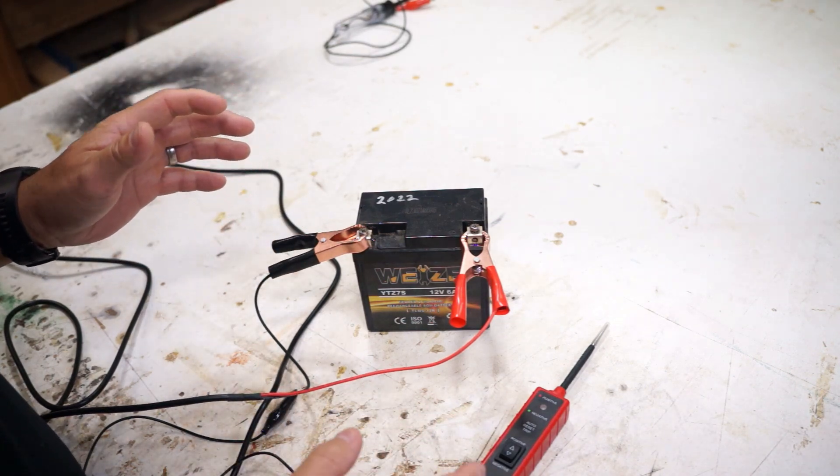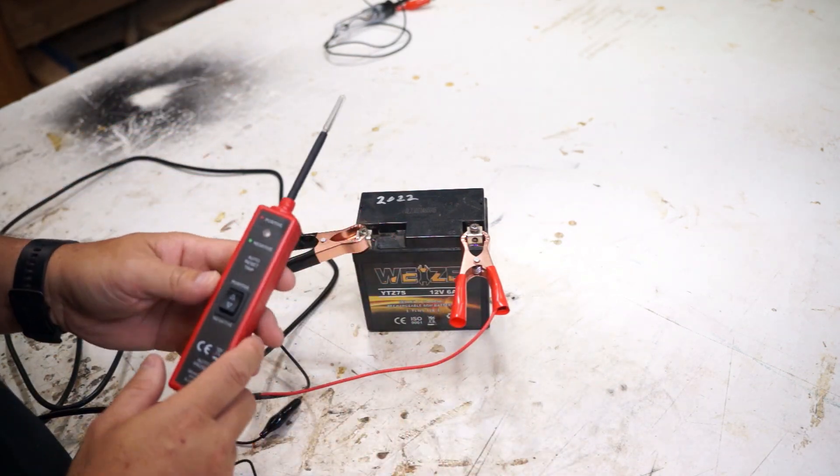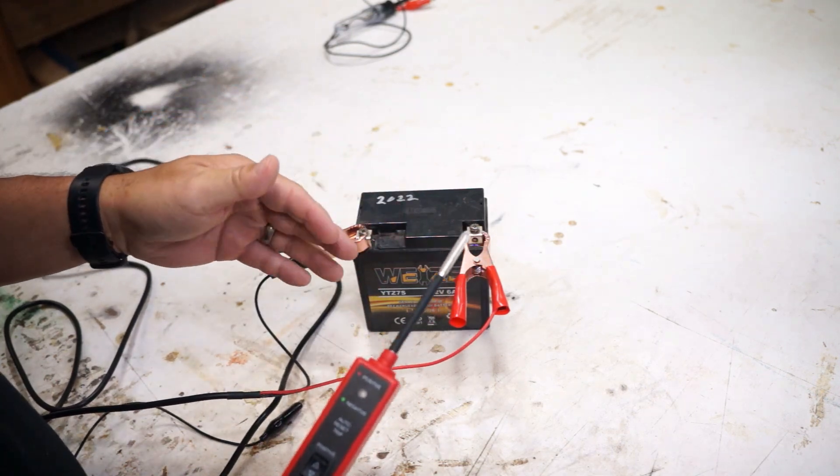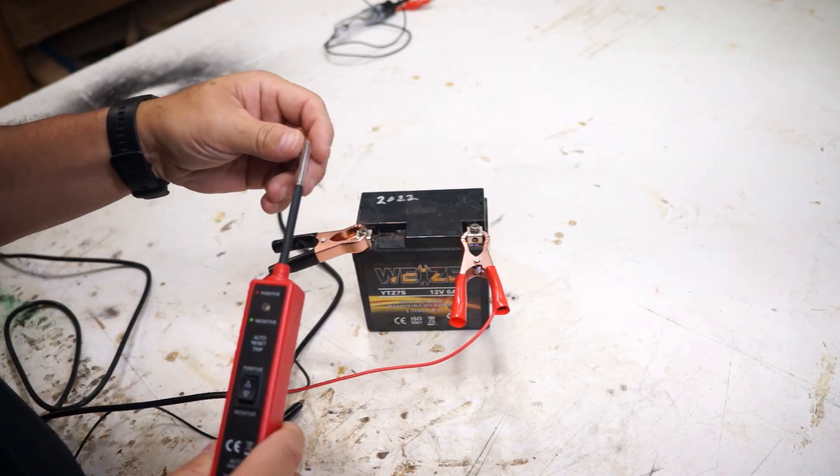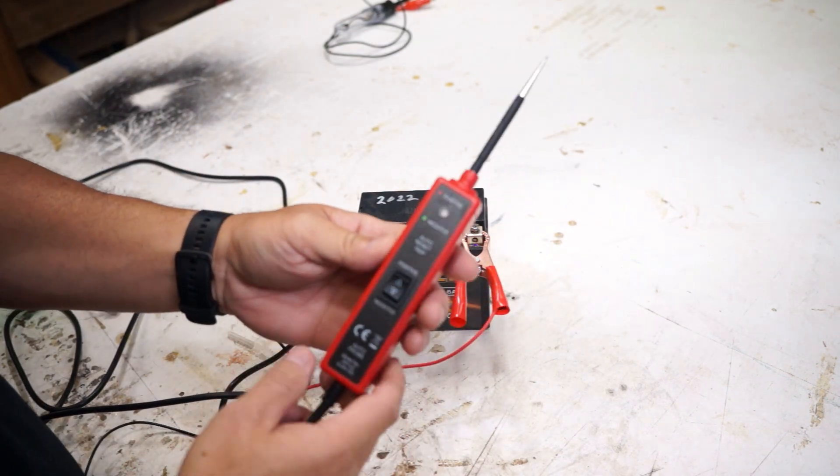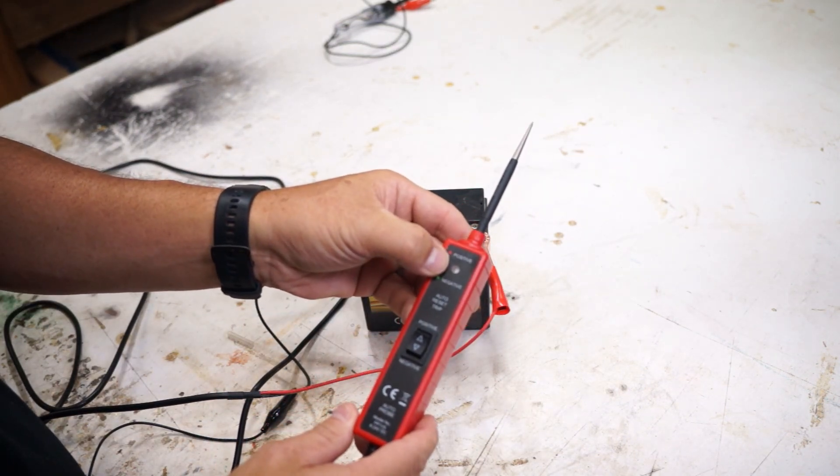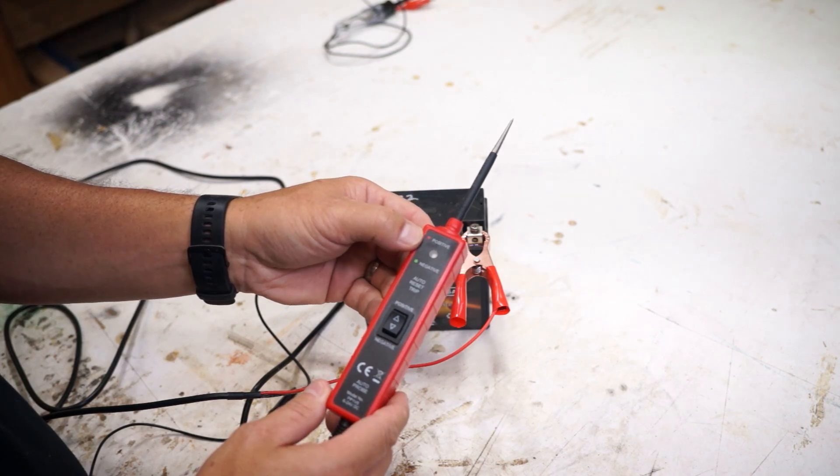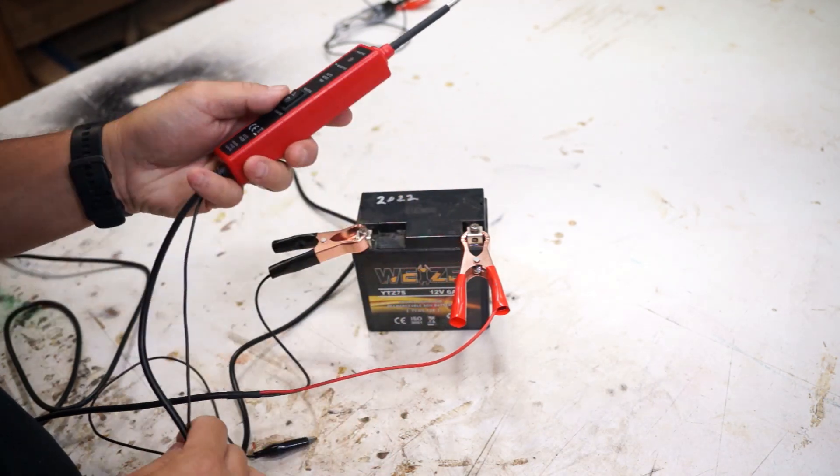So the first feature I like about this is that it can sense positive and negative without having to move anything around. You can just touch a wire and tell if it's grounded or if it has positive power. This comes with an LED light and this is going to tell you red if it's getting positive power or green if it's negative.